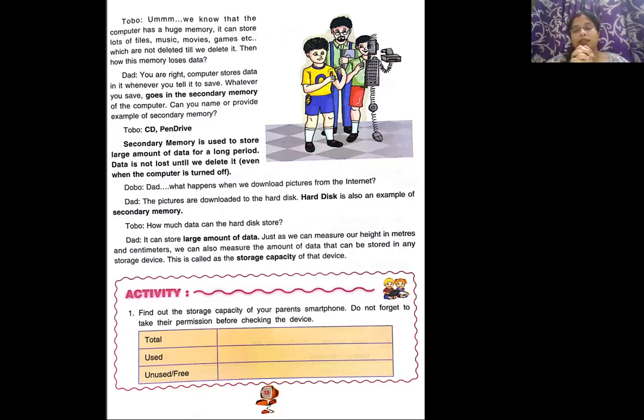Once you click the save button on the computer for your file, then it gets shifted from primary memory to the secondary memory, and secondary memory is the permanent memory of the computer system. Primary memory is not the permanent memory. Now, we all know that computer can store huge data in the form of files and documents. What all can a computer store? Computer can store a written file, it can store a musical file, that is audio file, it can store movies, which is audio and video file, it can store games, it can store images, which are not deleted until we delete it.